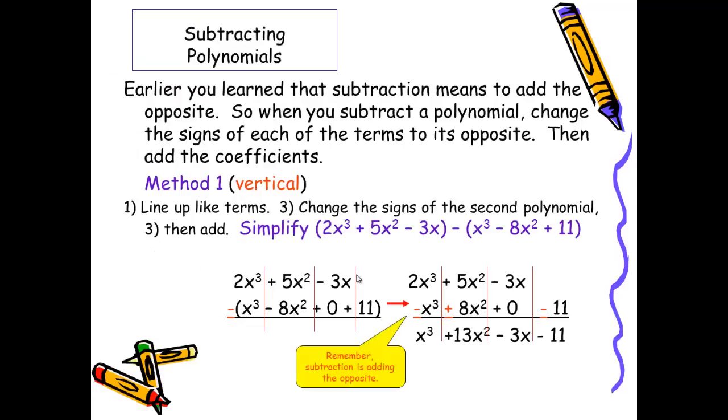Now we're going to take a look at subtracting. Just keep in mind that when you subtract, what you're really doing is adding the opposite. So the easiest way to do this when using the vertical method is to line up the like terms once again, and then change the signs of the second polynomial. Because remember if you subtract a positive, it becomes a negative, and when you subtract a negative, it becomes positive. So you can essentially go through and take the opposite sign of each of the subtracted polynomial. When I combine the like terms, I get 2x³ - x³, which is x³. A positive 5x² + 8x² is 13x². I've used a placeholder of zero here since there's only one term with an x, so this is just -3x. And then I have -11.